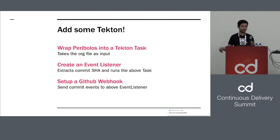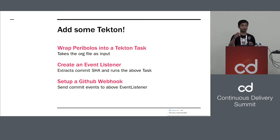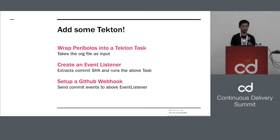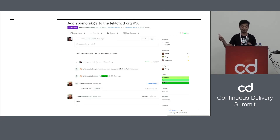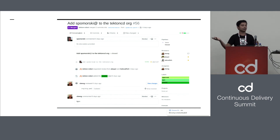Next up, we create an event listener, and in it we say: extract the relevant values out of it, and then run the above task. And then finally, we set up a GitHub webhook to say: when you push to this repo, send your commit events over to this event listener. And that's it. So what do we get? Here's a quick pull request — someone adding themselves to the org — and there you go. You open a pull request, when it's merged, your membership structure reflects it. This is Tekton dogfooding itself using Tekton Triggers, which is pretty cool.